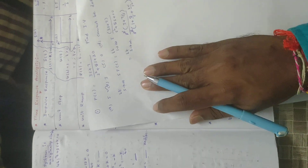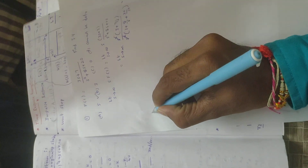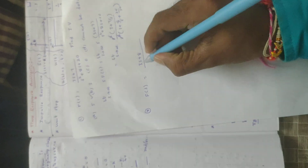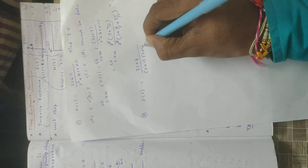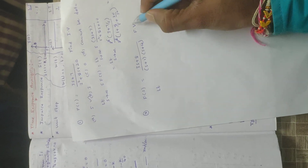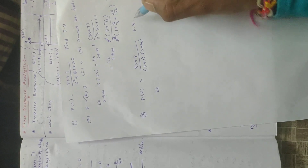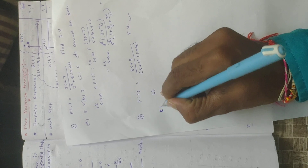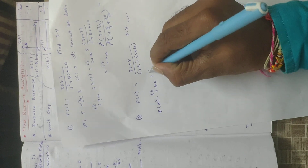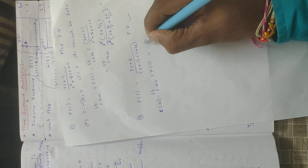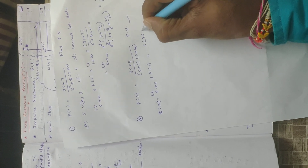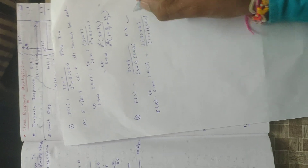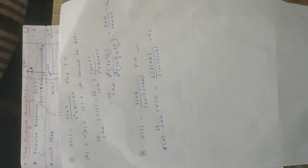Second problem: f of s equals 3s plus 8 by s plus 1 into s plus 4. Determine the final value. All poles — at s equals minus 1 and minus 4 — are in the left half of the s-plane, so the condition is satisfied. Applying the formula: limit s tends to 0 of s into 3s plus 8 divided by s plus 1 into s plus 4. Substituting s equals 0, the numerator s term vanishes, giving the final value as 0.